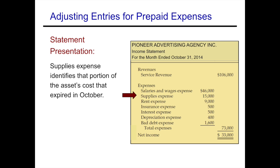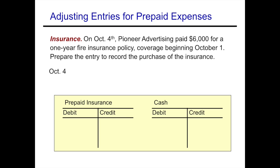Continuing with examples of prepaids, let's look at insurance. On October 4th, Pioneer Advertising paid $6,000 for a one-year insurance policy with coverage beginning October 1st. We need to prepare the entry to record the purchase. We debit prepaid insurance because it's something not yet used up — it's an asset — for $6,000, and credit cash for $6,000, then post that to the ledger.